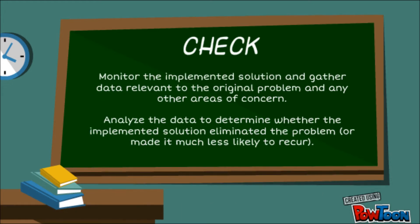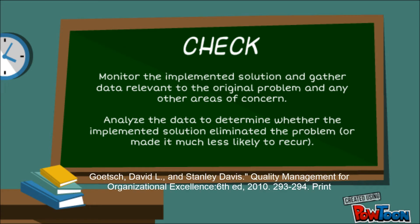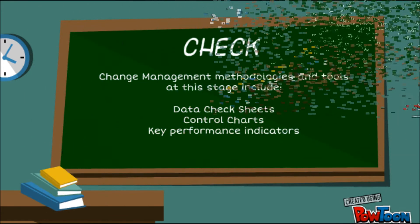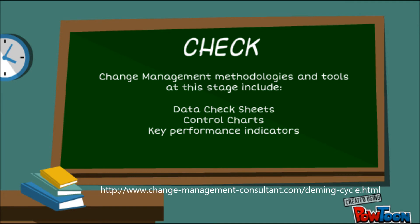The third stage is to Check. This is the part where you monitor the implemented solution and gather the data relevant to the original problem and any other areas of concern — for example, concerns about unintended consequences of the solution. Analyze the data to determine whether the implemented solution eliminated the problem or made it much less likely to recur. Change management tools used at this stage can include data check sheets, control charts, and key performance indicators.